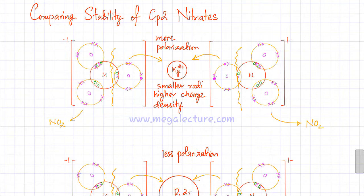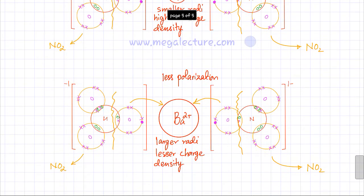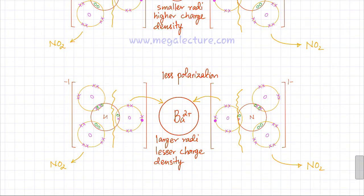So let's write this down. Magnesium nitrate is going to be less stable — it decomposes more easily. Group 2 metal nitrates at the top of the group decompose easily at a lower temperature. Whereas barium nitrate, lower down in group 2, is going to be more stable to heating — it requires a much higher decomposition temperature and is much more difficult to decompose.